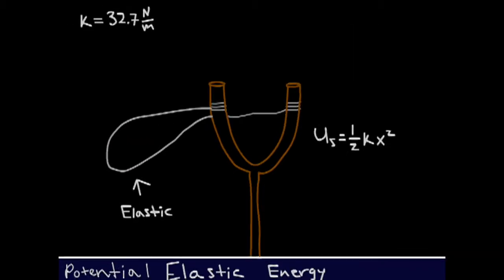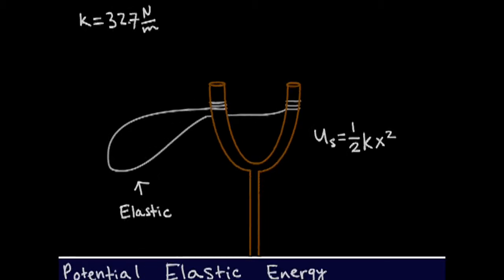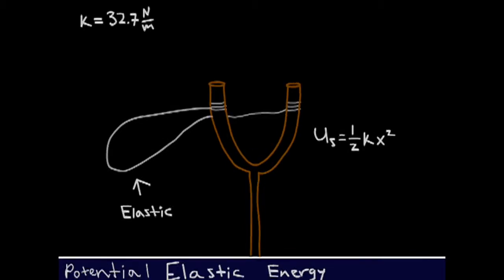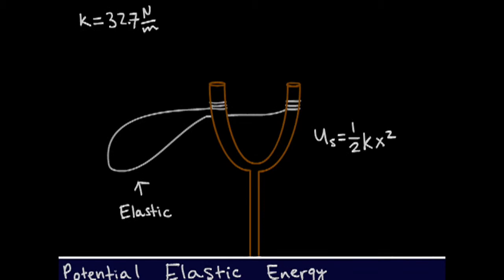Slingshots have something called potential elastic energy where the energy is found by the equation Us equals one half kx squared, where k is a constant and usually slingshots have a constant of 32.7 newtons per meter, and the x is the distance that you draw the slingshot back.